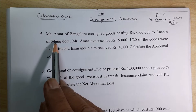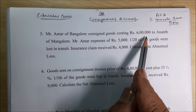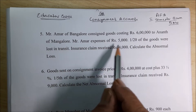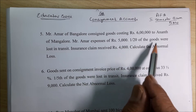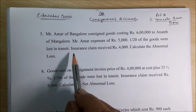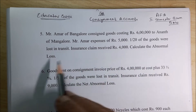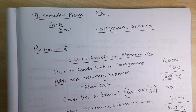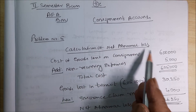Question number 5. Mr. Amar of Bangalore consigned goods costing rupees 6 lakhs to Anant of Bangalore. Mr. Amar's expenses were rupees 5000. One-twentieth of the goods were lost in transit. Insurance claim received rupees 4000. You have to calculate the abnormal loss.